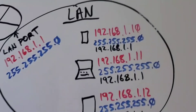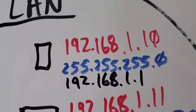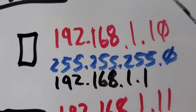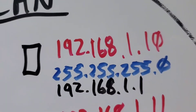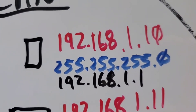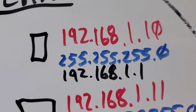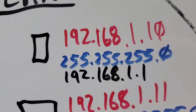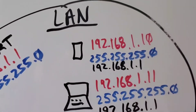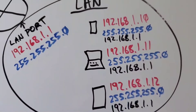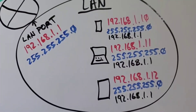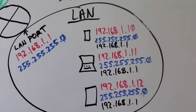If I was going to add more devices to my network, and you want to know what your subnet mask or default gateway should be, you can always log into the router to find out that information.